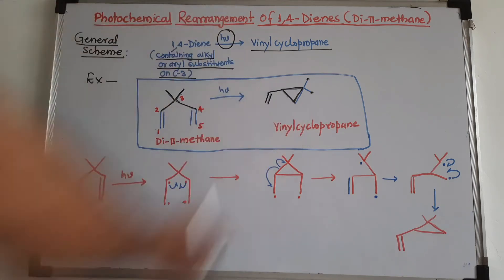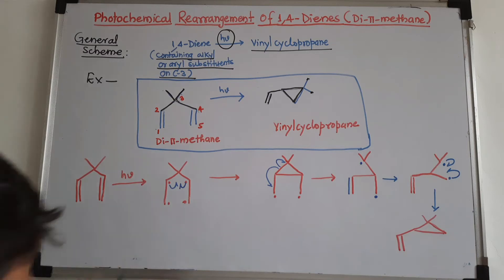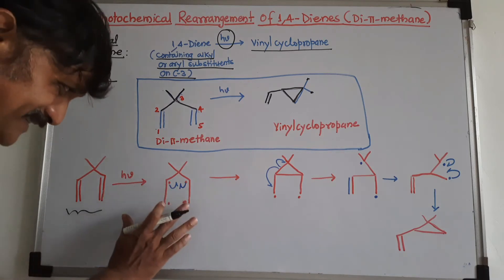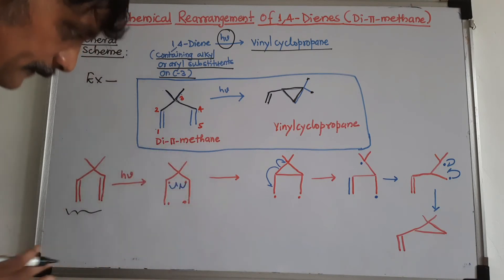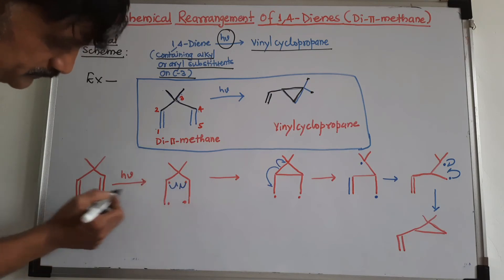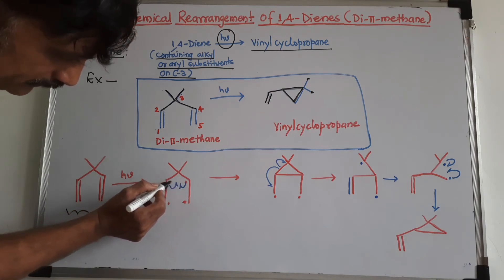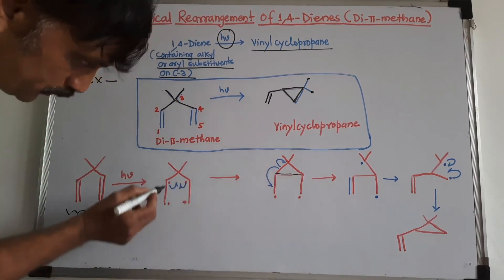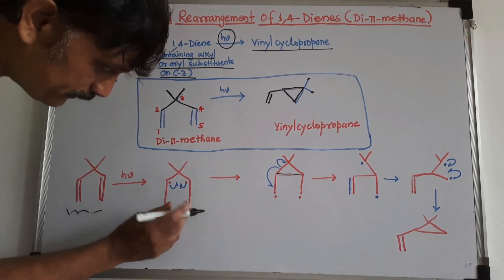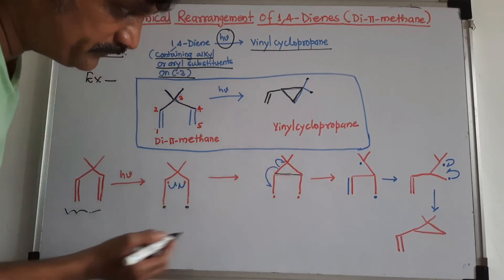Here you can see the mechanism of this reaction. When divinylmethane is irradiated with light of a certain wavelength, it goes to the excited singlet state and then the triplet state — you can recall the journey from the Jablonski diagram. In the excited state it is present in the form of radicals. Four electrons from the two pi bonds are involved: two electrons from the two pi bonds are very close and form a sigma bond, while the remaining two electrons from the same pi bond produce a biradical.